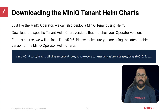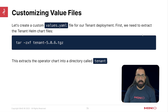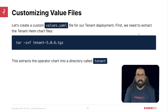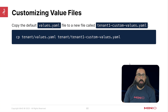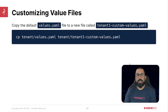We will run a curl command to download the tar.gz file, and once we download it to our local system we'll unpack it. You can see there is a values.yaml contained within this, so we'll run tar -zxf and then the name of the tgz file of your tenant Helm files. Once we've extracted that, we go into the tenant directory that gets automatically created, and we copy that values.yaml to a new file called tenant1-custom-values — to denote that this is a unique file we've modified for our use case for tenant1.